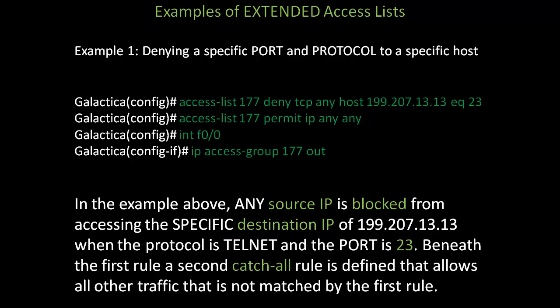Now that we've created the access list, we need to apply it so it actually does something. In global configuration mode, select an interface — fastethernet 0/0 — and apply the access list with ip access-group 177 out to specify outbound traffic. Any source IP is blocked from accessing the destination IP of 199.207.13.13 when the protocol is Telnet and the port is 23. Beneath the first rule, a second catch-all rule is defined that allows all other traffic not matched by the first rule.